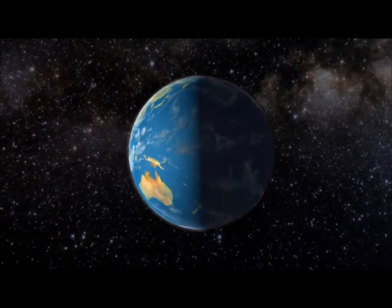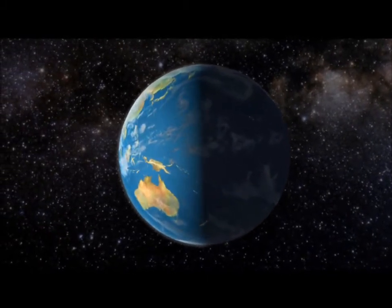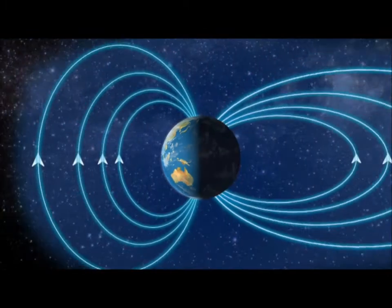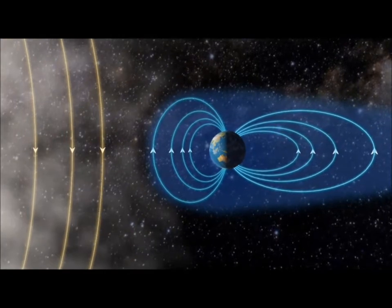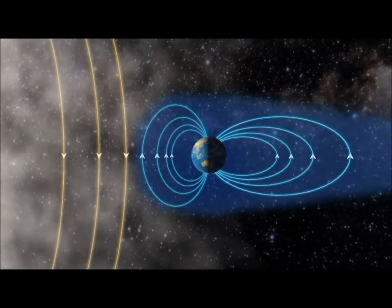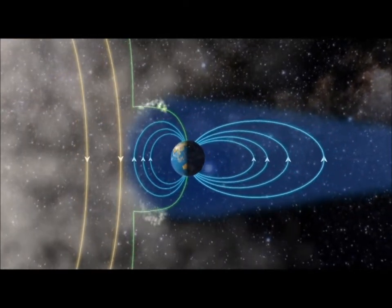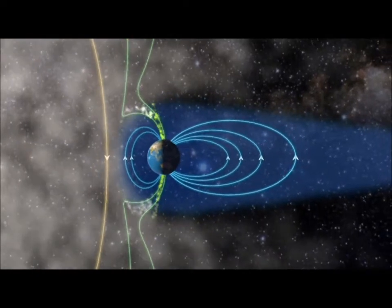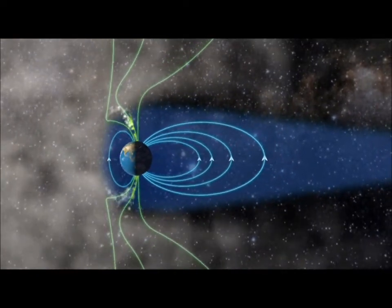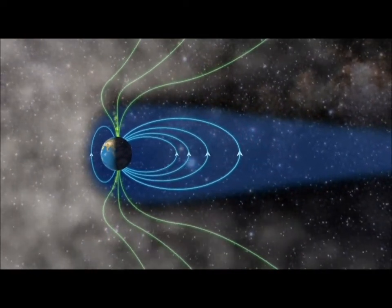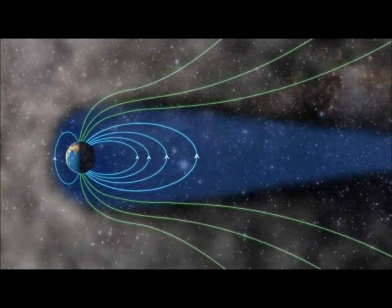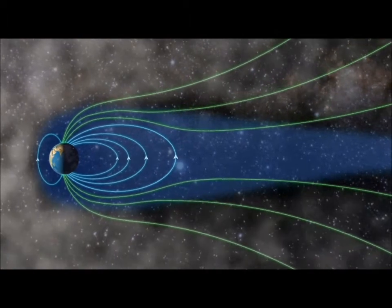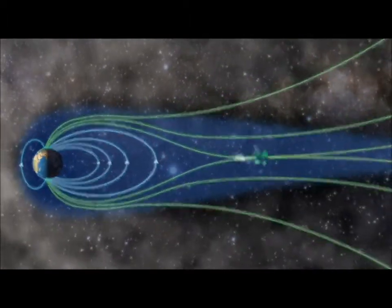When the solar storm reaches our planet something strange happens. An invisible shield, the Earth's magnetic field, deflects the storm. The magnetic fields couple together and create a funnel where the gas streams down on the daylight side of the pole. This is the daylight aurora. The magnetic fields stretch further back and couple together. The magnetic rubber band breaks.